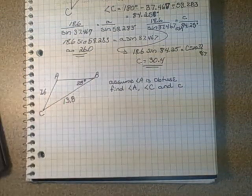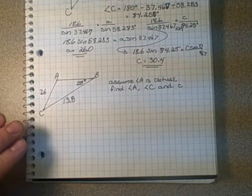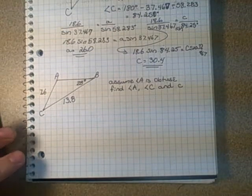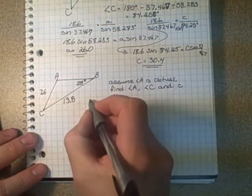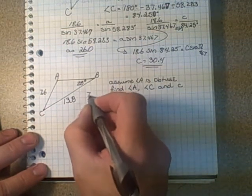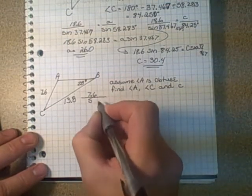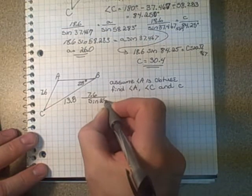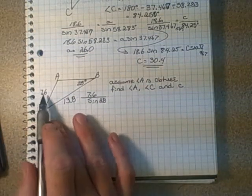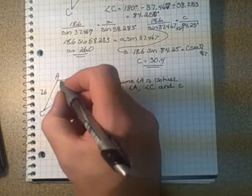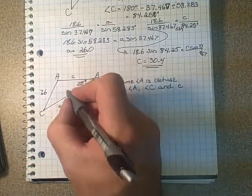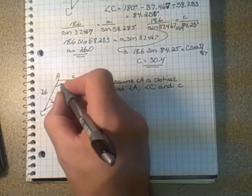We're given two sides and an angle, and we want to calculate the two unknown angles and a side. We know that 7.6 over the sine of 28, because that would be side B over sine of angle B. So that's side B and that's angle B. Now we know that this is angle A, so this must be side A, which is 13.8. And side C is unknown, along with the other unknowns.